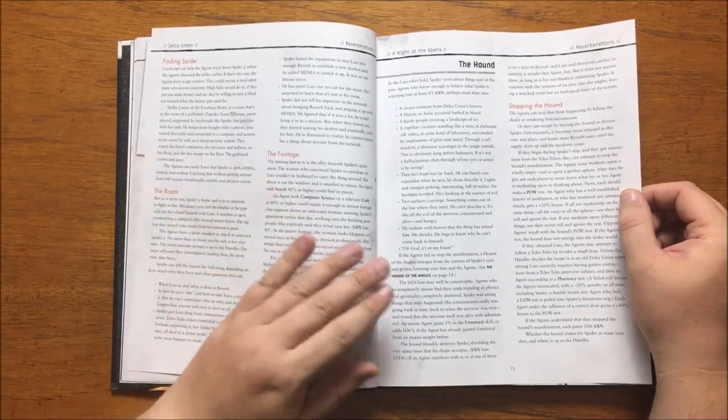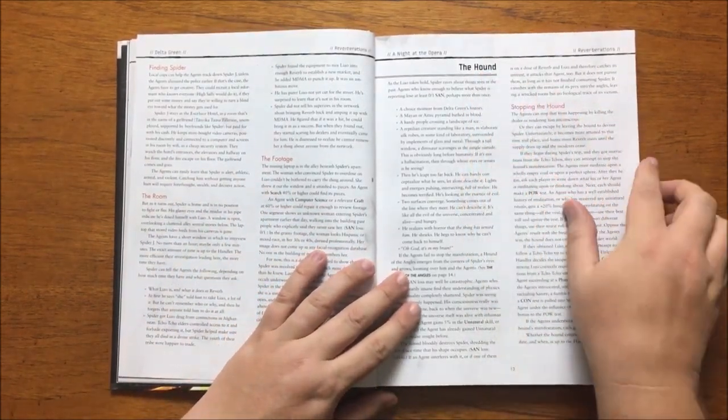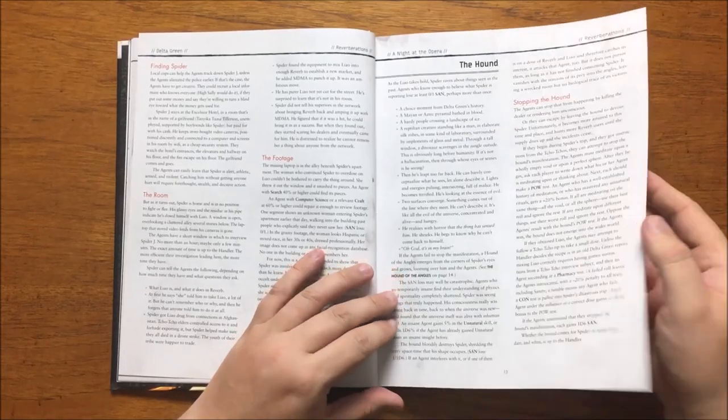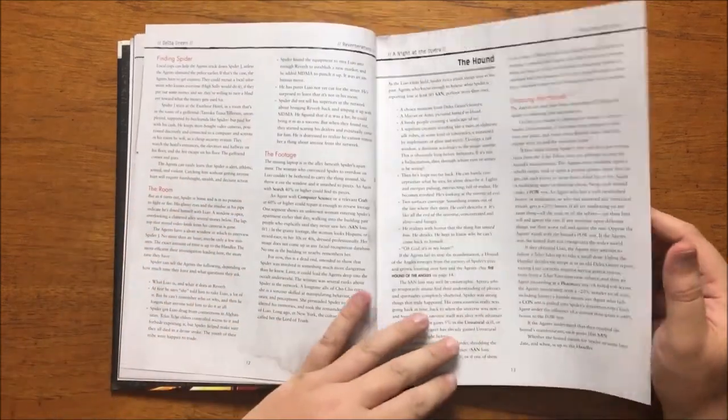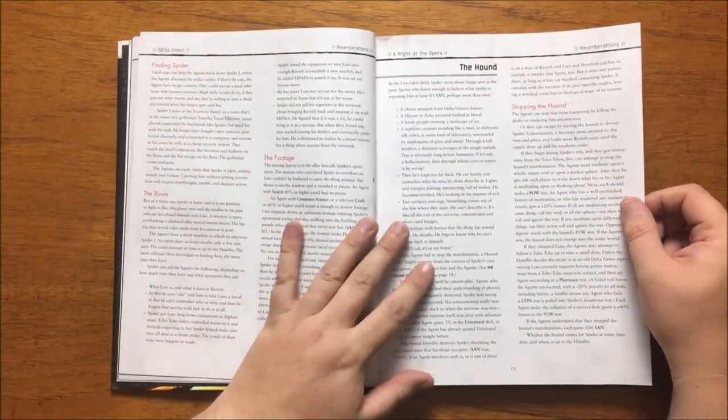At this point a hound of the angles emerges from the corner of Spider's eyes and grows large looming over him and the agents. The hound destroys Spider, shredding the space and time that his body inhabits. It will only attack the agents if they have taken Liao or interfere with it.